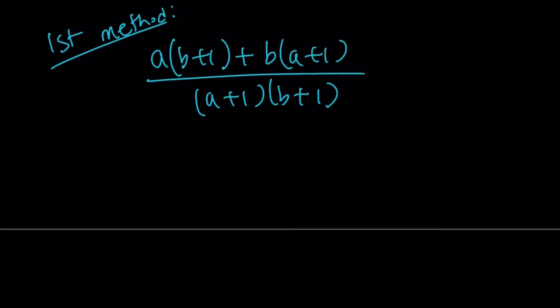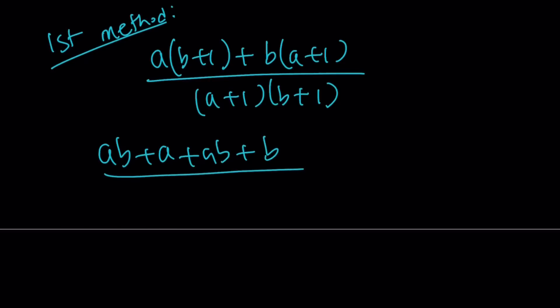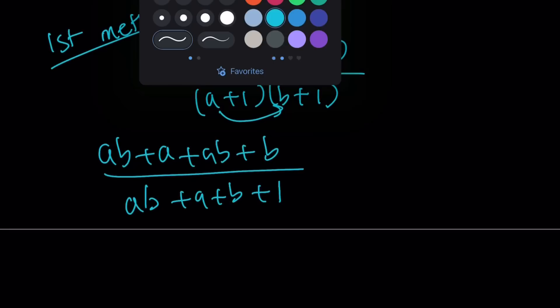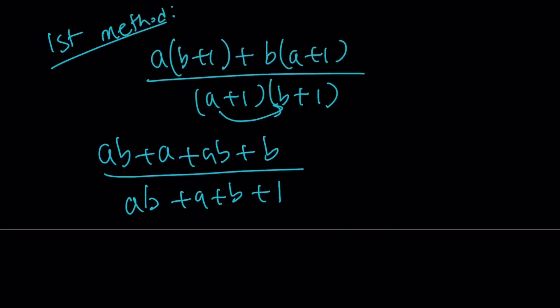Let's go ahead and distribute and see what happens. For the first method, I'm making a common denominator. Multiply a by b plus 1, multiply b by a plus 1, and multiply the denominators. Distributing the numerator gives us ab plus a, plus ab plus b. Since ab equals 1, each ab becomes 1. The denominator gives us ab plus a plus b plus 1, and since ab equals 1, that becomes 1 plus a plus b plus 1.